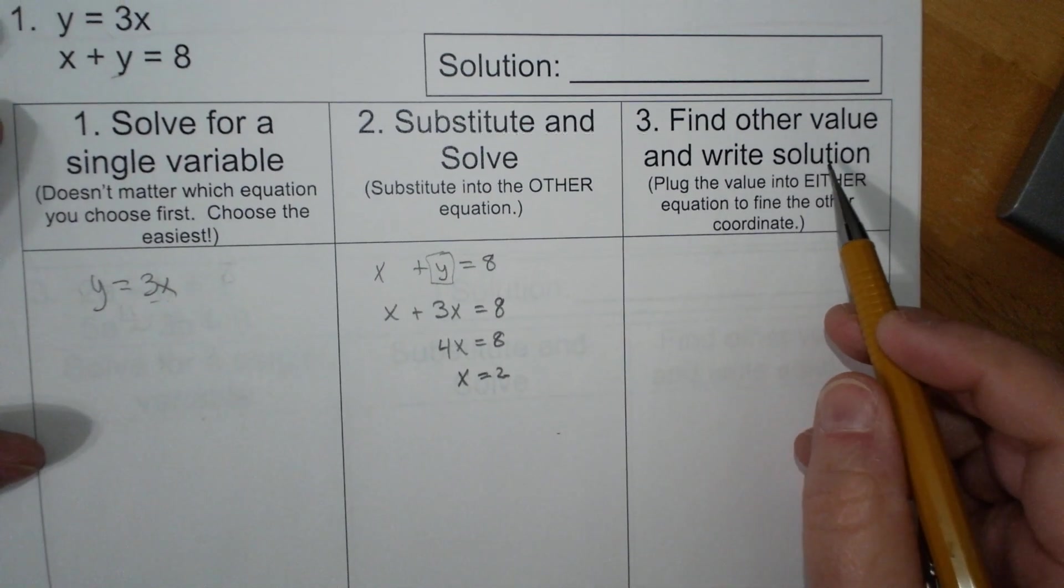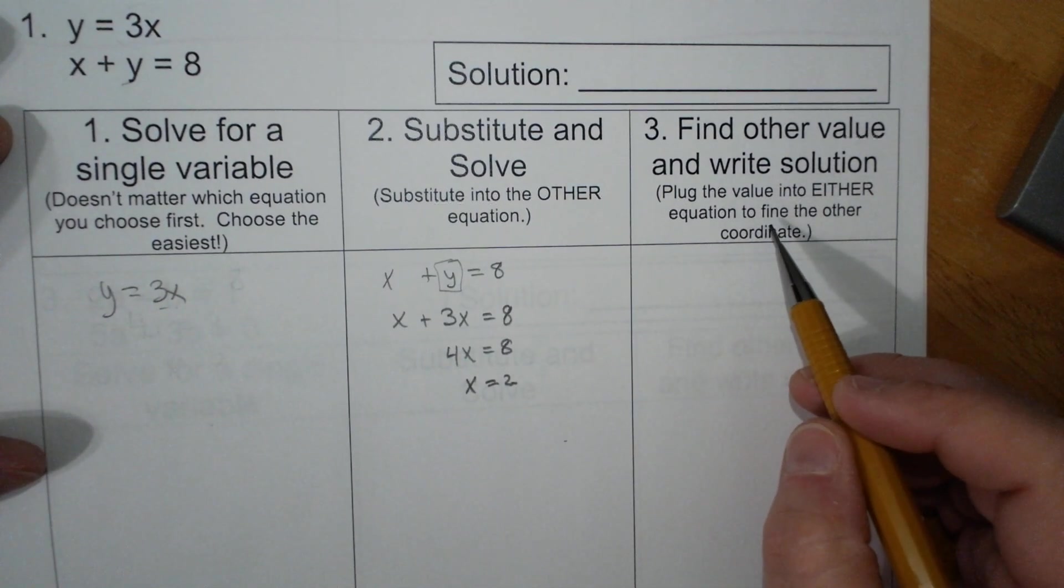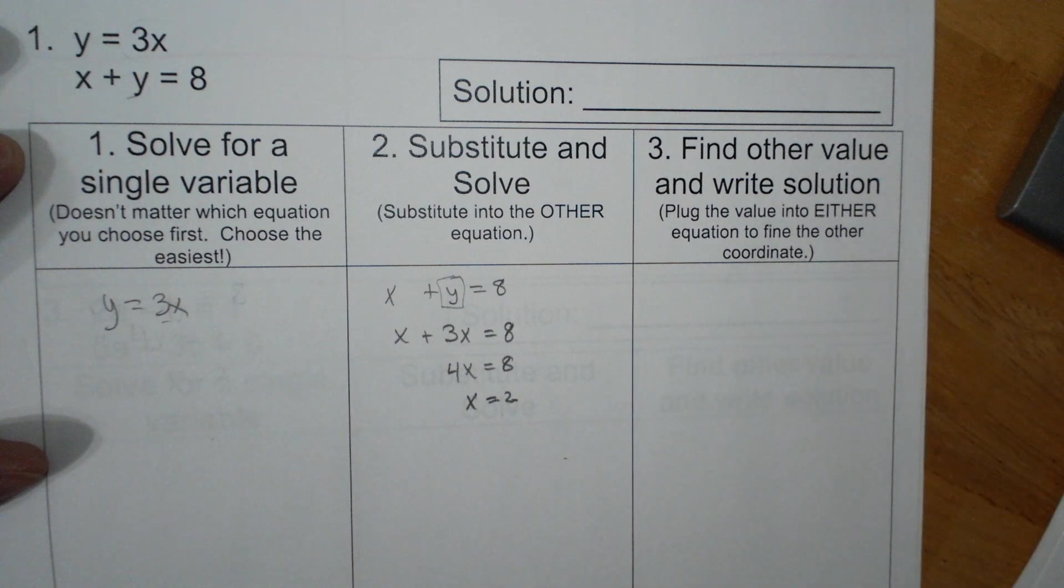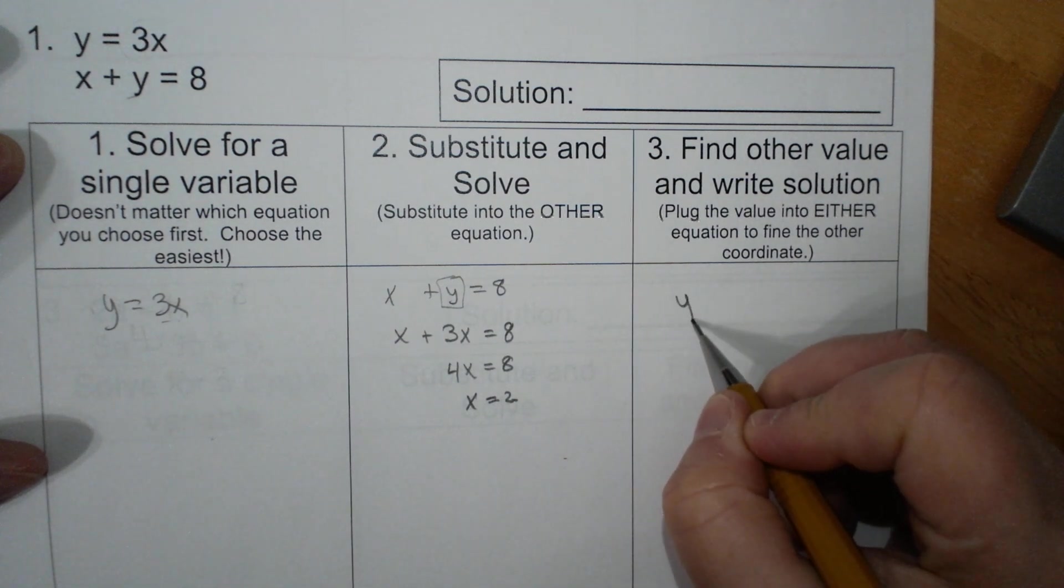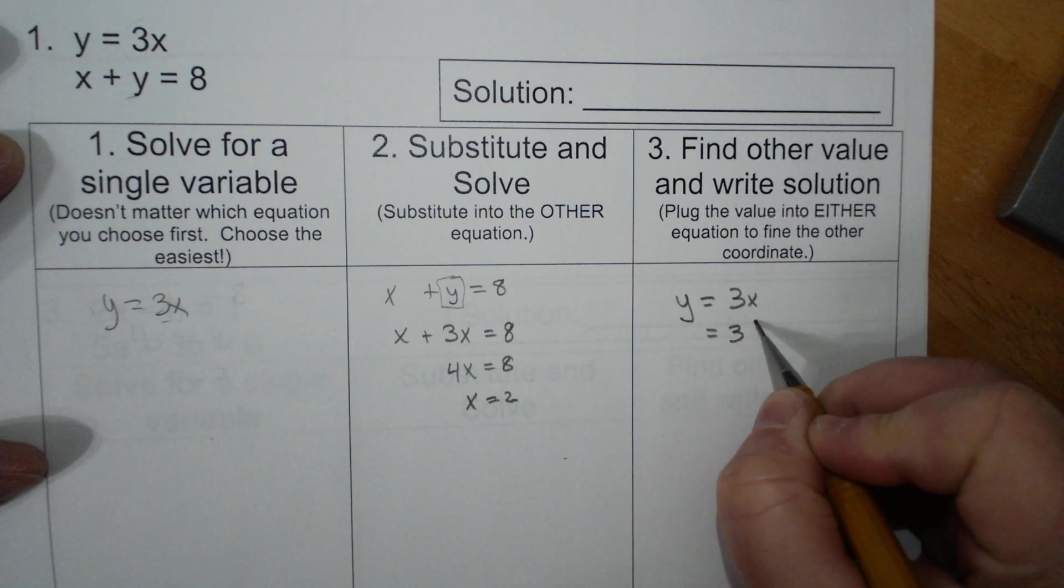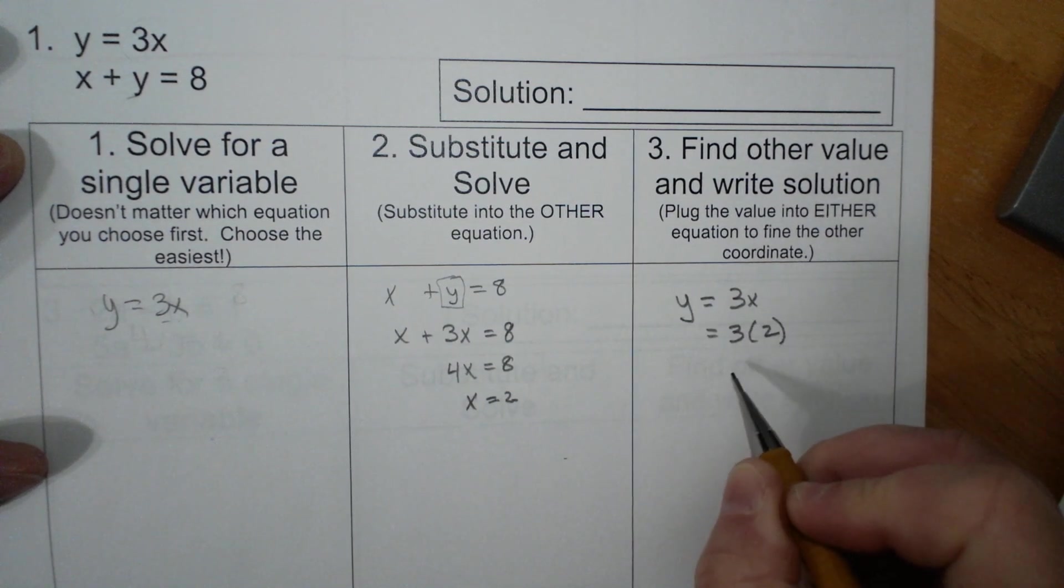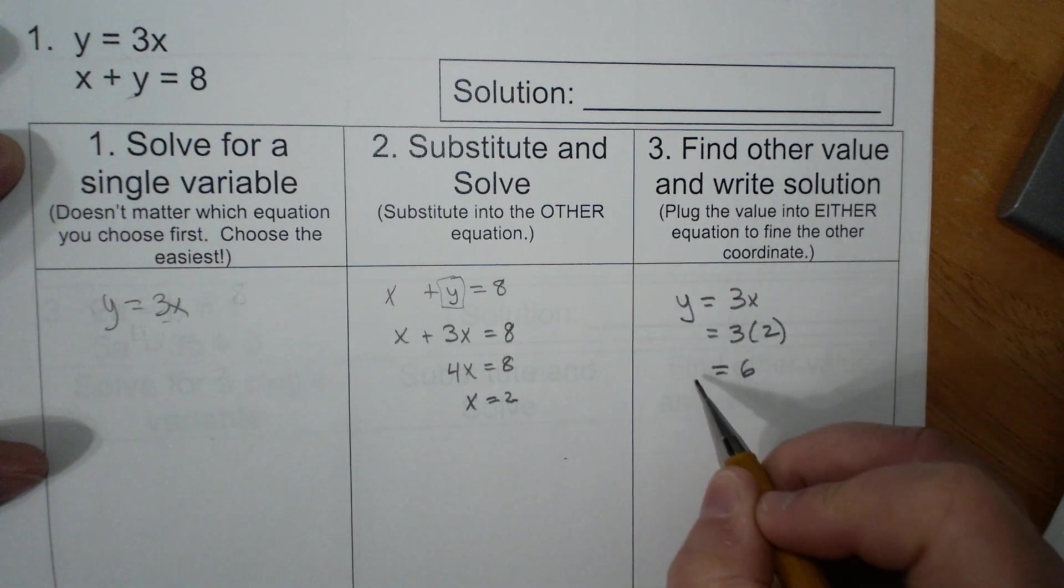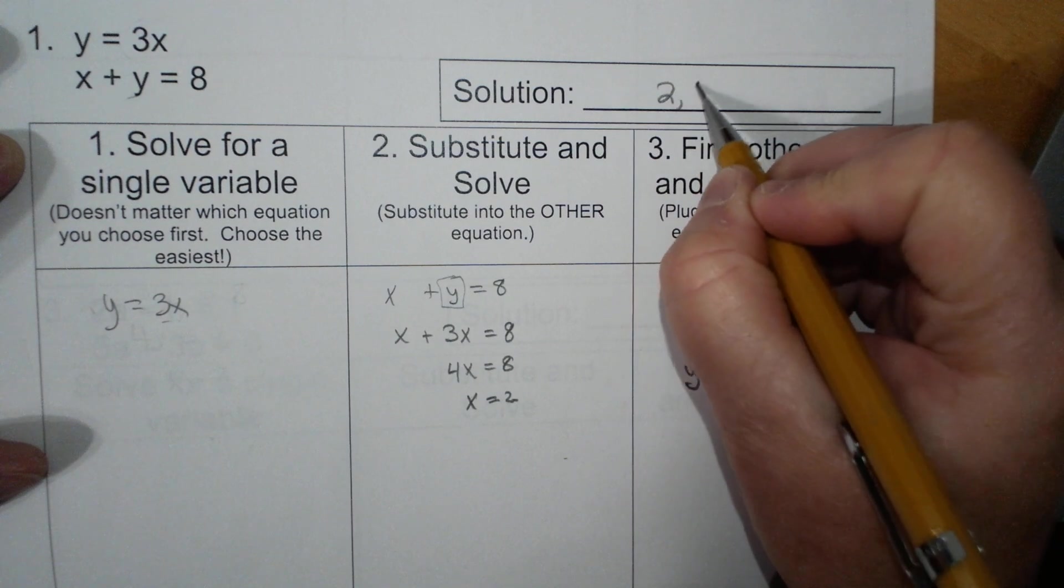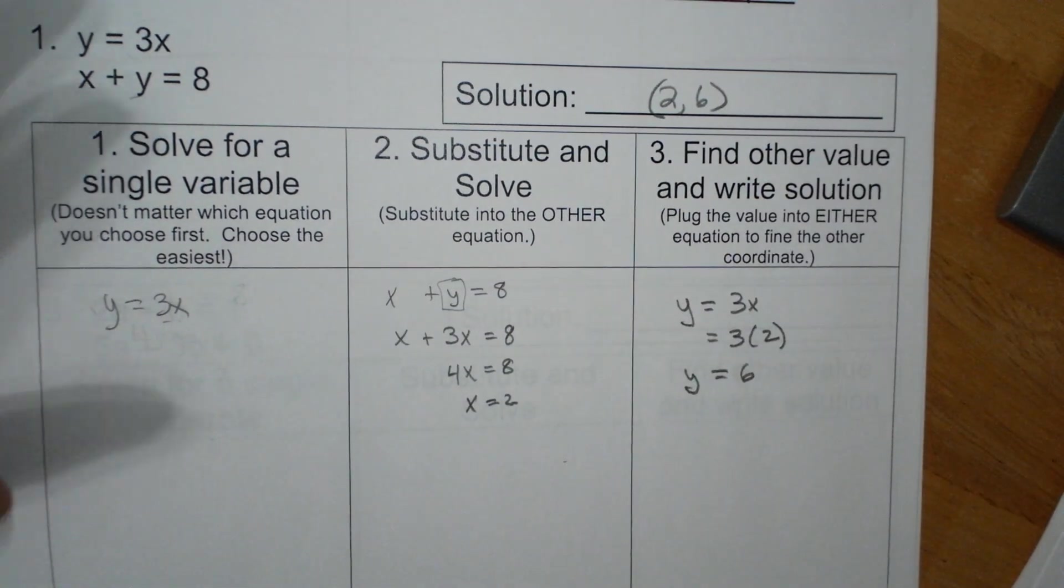Then I'm going to find the other value and write the solution. I can plug it into either equation. I'm going to do the easiest one. If y equals 3x, and I know what x is, I'm going to substitute it in and y equals 6. So I have the ordered pair, 2 comma 6, and that is my answer.